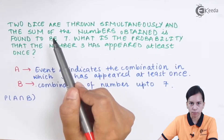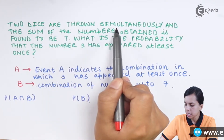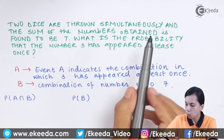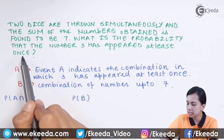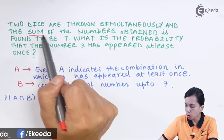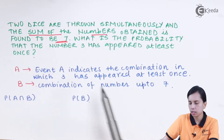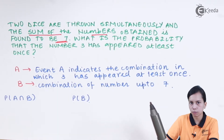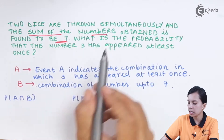Let us look at the question: two dice are thrown simultaneously and the sum of the numbers obtained is found to be seven. What is the probability that the number three has appeared at least once? First of all, we have two events: the sum of numbers obtained is seven — this is the first event — and the second is that the number three has appeared at least once.